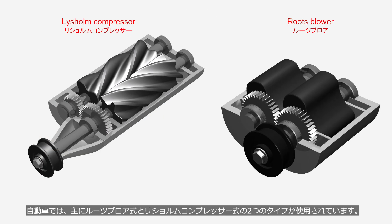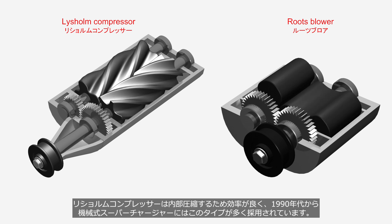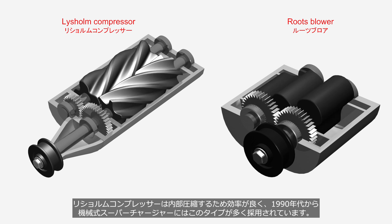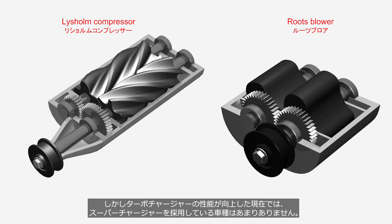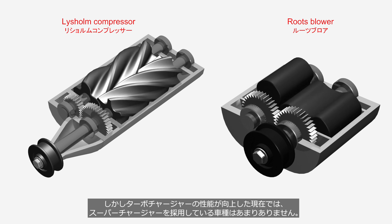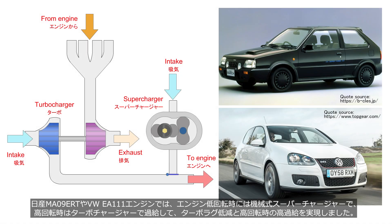In automobiles, two main types of mechanical supercharger are primarily used: the roots blower and the Lysholm compressor. Lysholm compressors, being more efficient for internal compression, have been widely adopted in mechanical superchargers since the 1990s. However, with current advancements in turbocharger performance, there are not many vehicle models that utilize superchargers. In the Nissan MA09 ERT and Volkswagen EA111 engines, a combination of mechanical supercharging at low engine speeds and turbocharging at high engine speeds was employed to reduce turbo lag and achieve high boost at high engine speed.